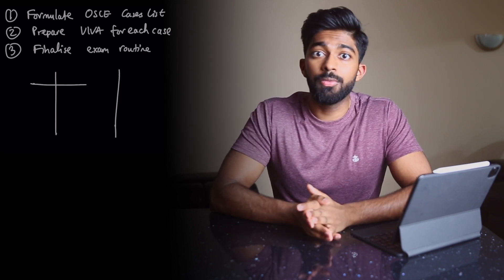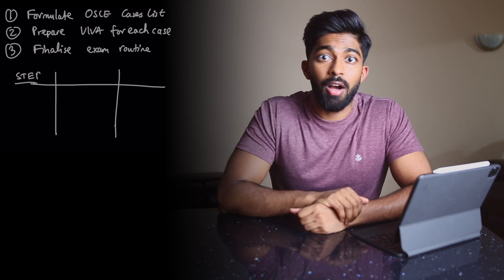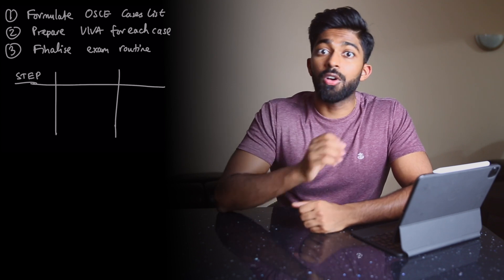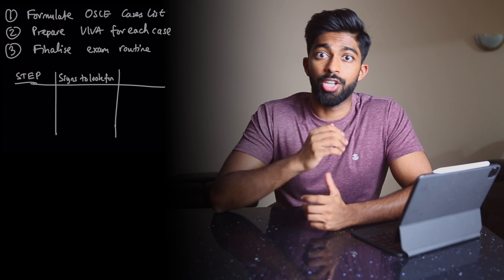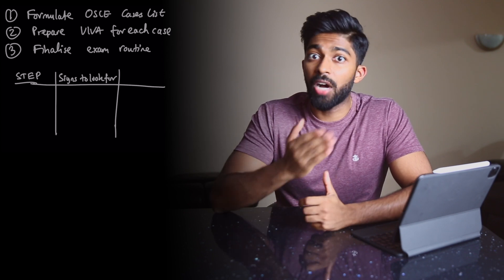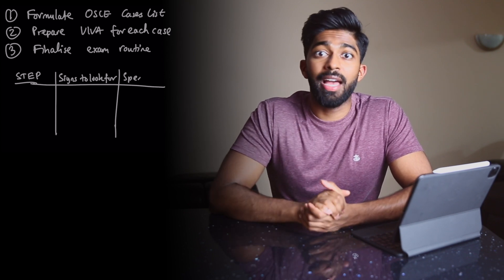So things like how you present those findings, the possible differentials. And then number three, finalising your examination routine into a table with three columns: the step of the routine on the far left, what signs to specifically look for in the middle column which we already know from our VIVA prep, and then the far right hand column.